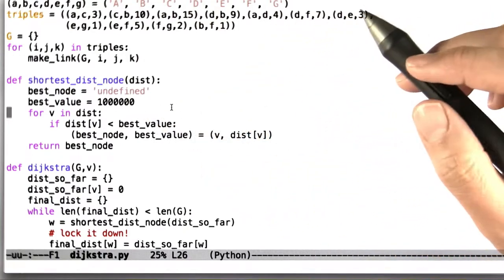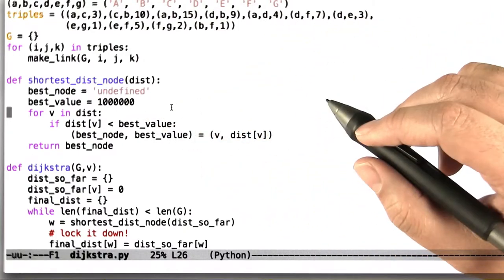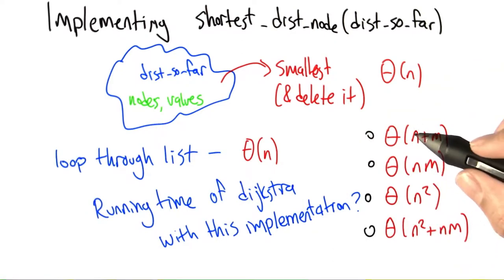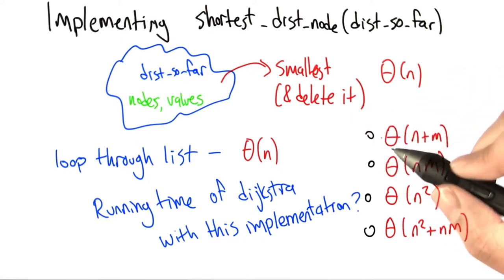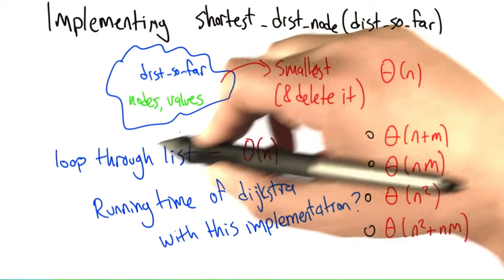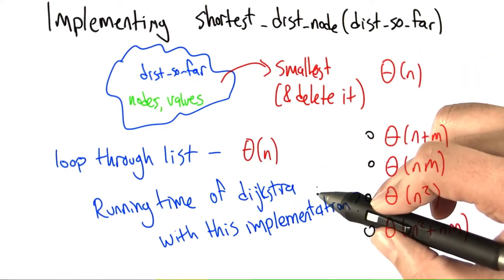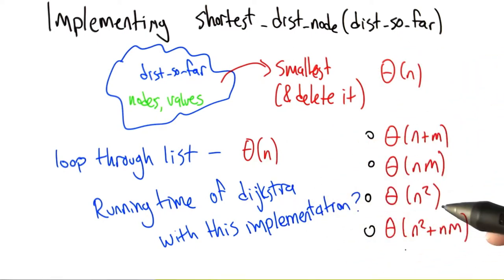So this is really quite straightforward. And what is the running time that this leads to? All right, so these are some trickier run times than the ones I've suggested in the past. But we've got n nodes and m edges. And we want to know if we implement the Dijkstra algorithm with looping through the list to find the smallest value, what is the running time that we get? So just make your selection.